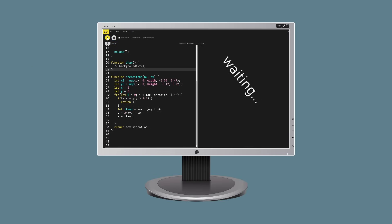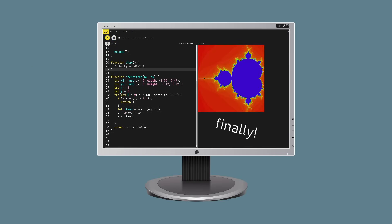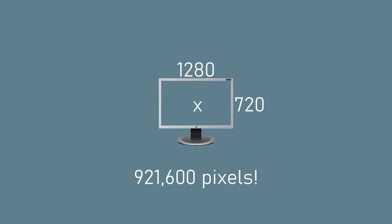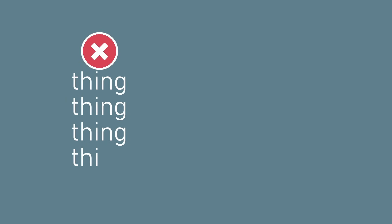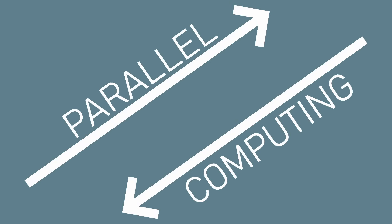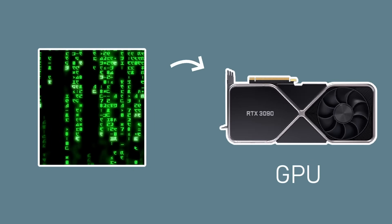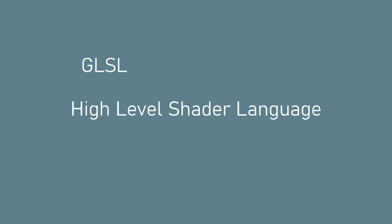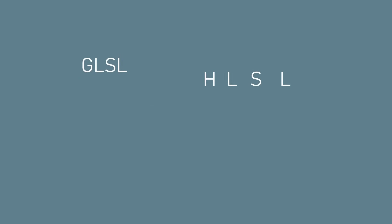The vertex shader takes these points and figures out where they should appear on the screen and then the fragment shader figures out what color each spot on the surface of that object should be. If you've ever tried doing things with individual pixels on the CPU you know it can be pretty slow. Even on a relatively small screen say 1280 by 720 there are nearly a million pixels that we want to update, which takes a long time to loop through, and if you want to try and do that 60 times a second, well good luck. The GPU is purpose built for these sorts of things — instead of doing things one after the other the GPU can do a whole bunch of calculations all at the same time. This is called parallel computing.